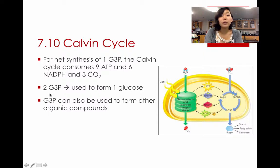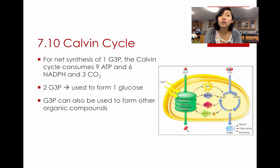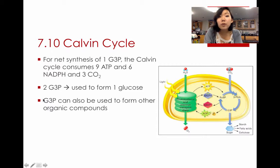Remember, you need two G3Ps to form one glucose. The easy way to remember is that G3P is a three-carbon sugar and glucose is a six-carbon sugar, so you need two three-carbon sugars to form glucose. Finally, you should know that G3P doesn't just form glucose — it can also form other organic compounds. And that is the summary of pretty much all of photosynthesis.